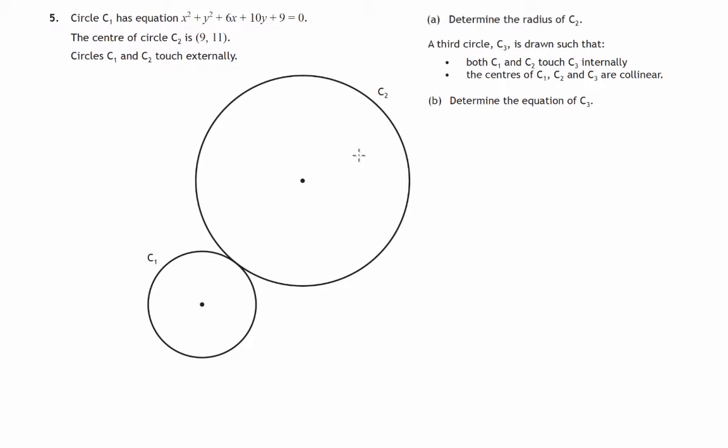In this question we're given two circles, C1 and C2, a smaller and larger circle, that are just touching. The two centers are shown, and we're told that one of the centers, C2, is at coordinates 9, 11. We don't know the other center, but we do know C1's equation.